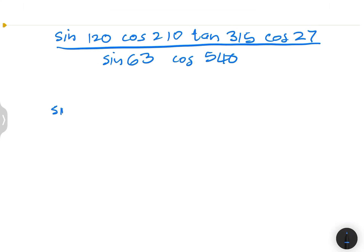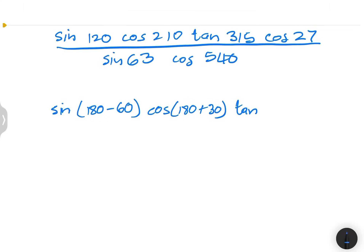So sine of 120 — that would be 180 minus 60. We know that 180 minus 60 gives me 120, so I've changed absolutely nothing. Then cos of 210 — this would be the same as 180 plus 30. As much as possible, I'm going to try and use 180 and 360. Remember that once you change to 90 and 270, we change to co-ratios. So now we've got tan of 315, which would be the same as 360 minus 45.